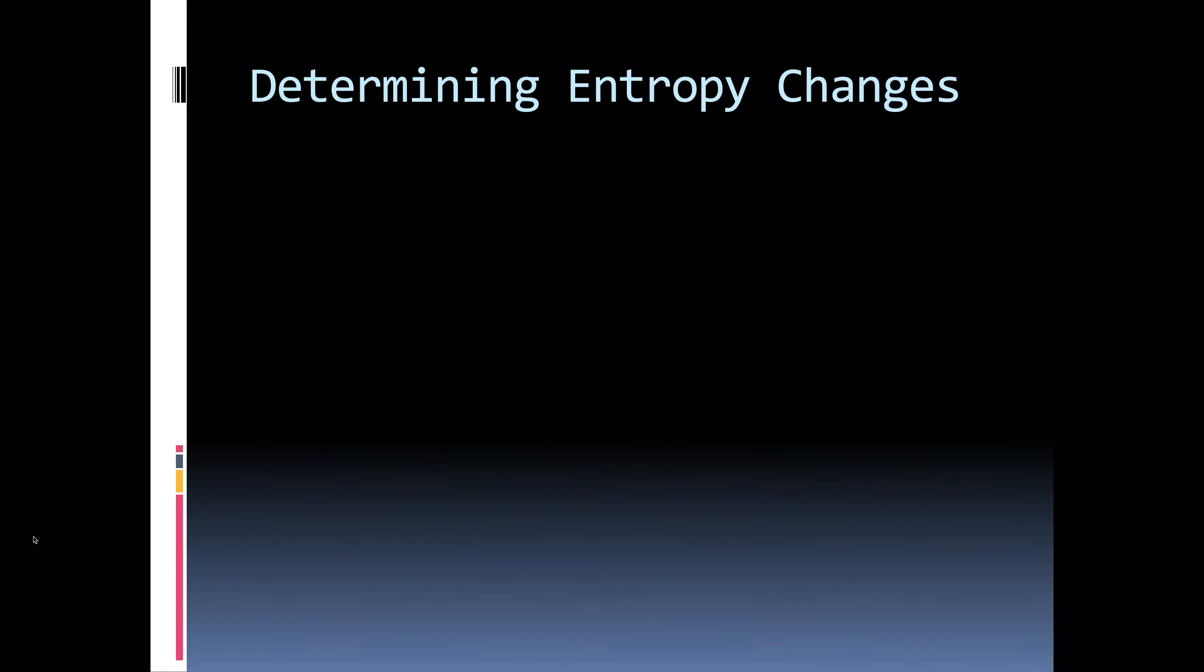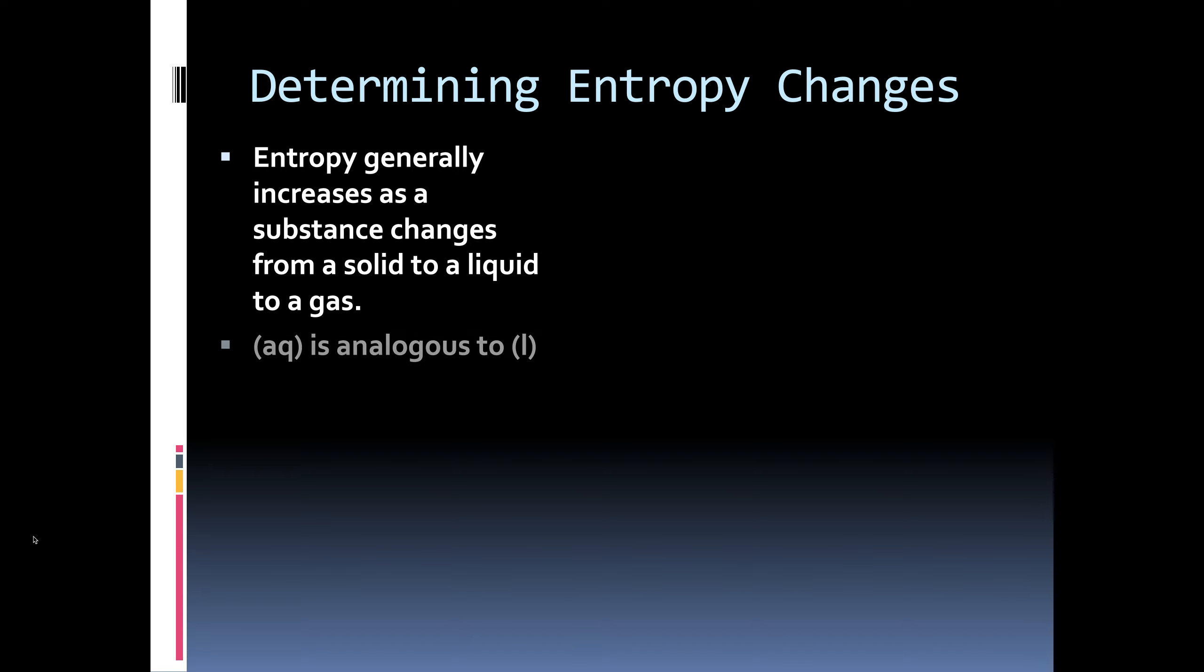So to determine the change in entropy that you have in a system, entropy will generally increase as a substance changes from a solid to a liquid to a gas. And for the purposes of what we're doing here, aqueous dissolved in water would have roughly equivalent entropy to the substance if it were in the liquid phase. For gases, the more gas you have flying around, the more chaos there is. Kind of like, let's say you have three kindergartners running around versus let's say 10 kindergartners running around, which is going to cause greater chaos. So more moles of gas is higher entropy.